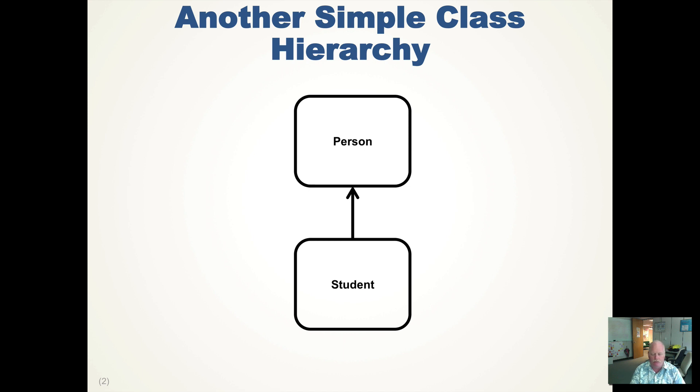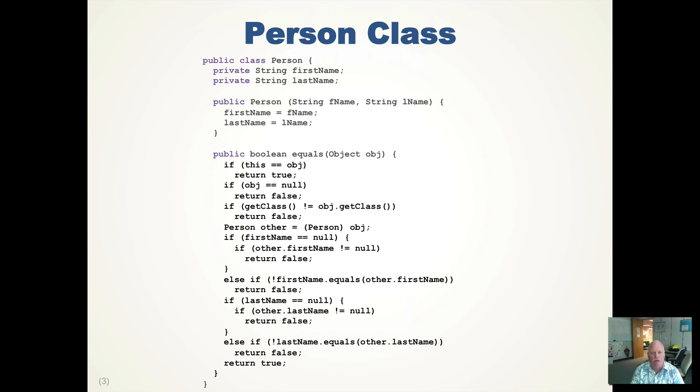So let's take a quick look at the person class. It has a private string first name and a private string last name. So a person has a first name and a last name, and it has a constructor that takes a first name and a last name, assigns it to our member variables, and then it has our equals method to determine if two person instances are equal to each other. So let's take a closer look at that.